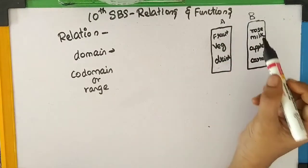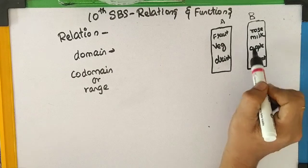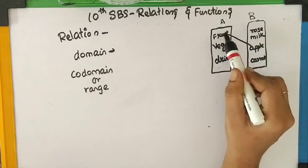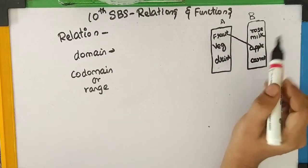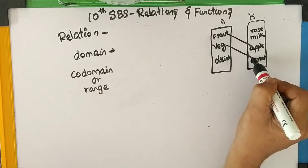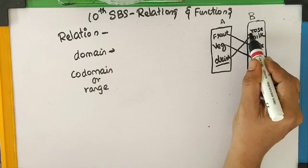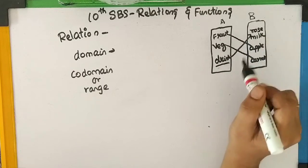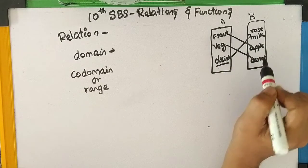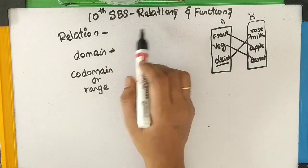Let's take set A and set B. Set A has fruits, vegetables and drinks, and set B has rose milk, apple and carrot. Fruit is related to apple, vegetables is related to carrot, and drink is related to rose milk. Here, set A is the domain and set B is the co-domain.